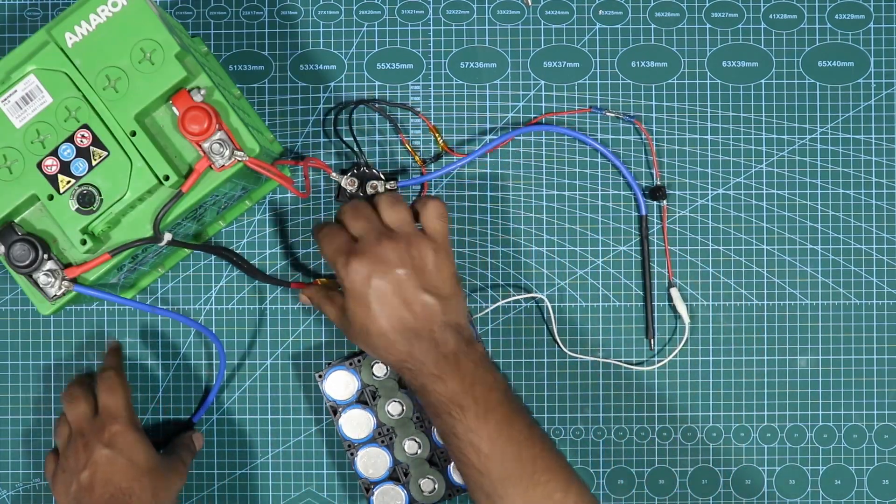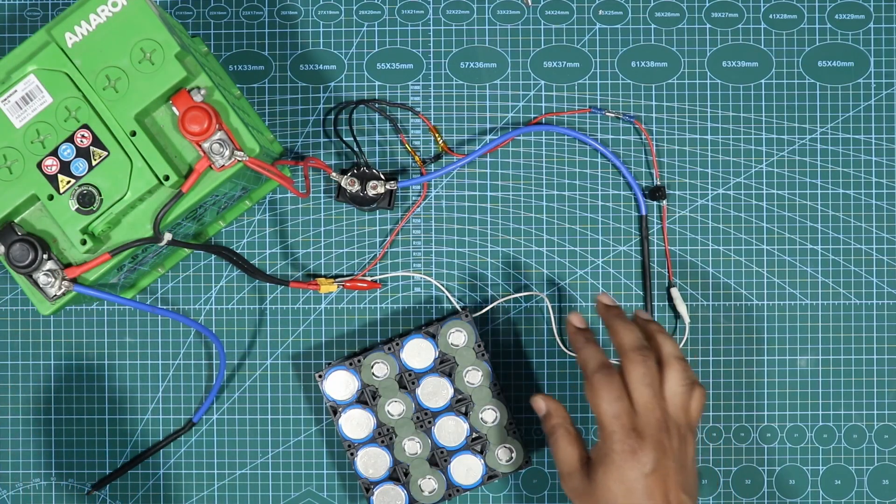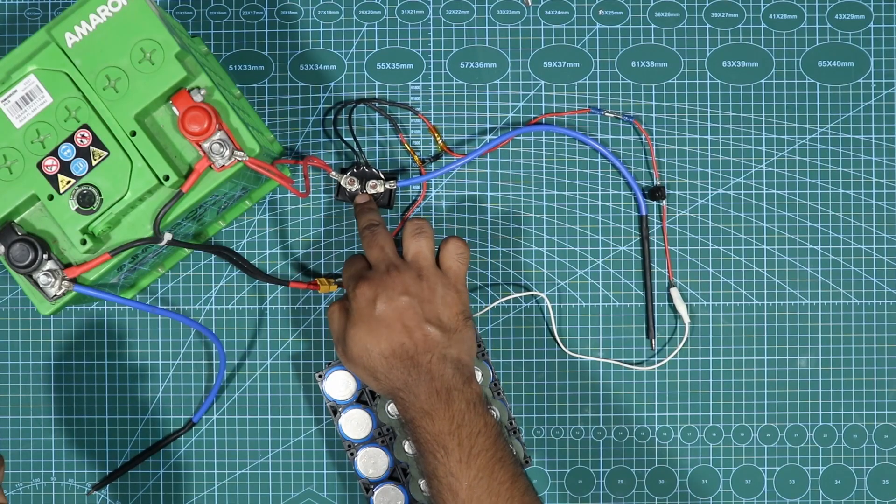So this is the spot welder that I was talking about. This works on a 55Ah car battery with a relay, with a switch, and two spot welding tips.